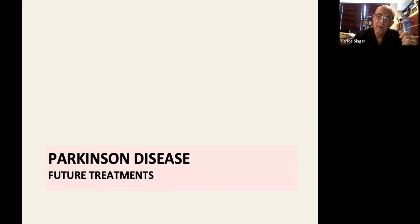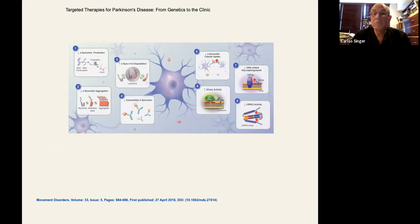So what does this result as far as future treatments? Some of them are already ongoing. Well, you can think of ways in which you would decrease the alpha-synuclein production. You could think of ways of decreasing the alpha-synuclein aggregation inside the neuron, or increasing its degradation, or decreasing the extracellular alpha-synuclein, or decreasing the alpha-synuclein cellular uptake.